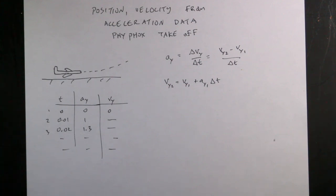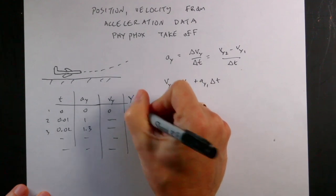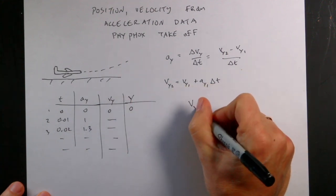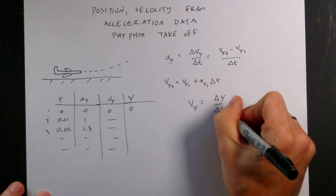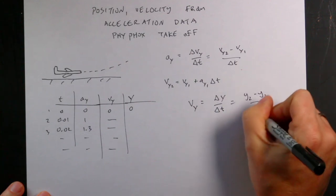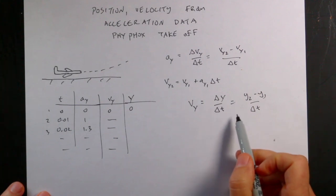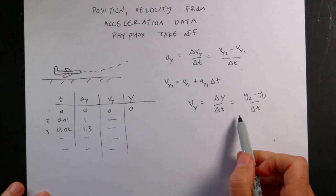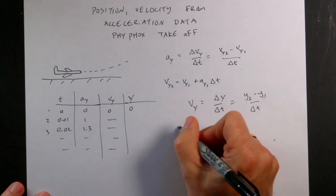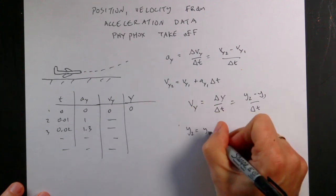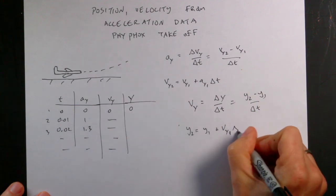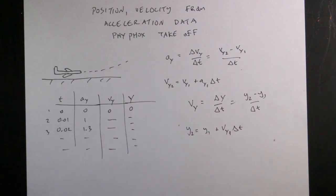Then I can do the same thing for position Y. VY equals ΔY over ΔT, so Y2 = Y1 + VY1·ΔT. This is the average velocity, but if the time interval is small it's not terrible. I have to pick a starting location, and then I can get all those position values.